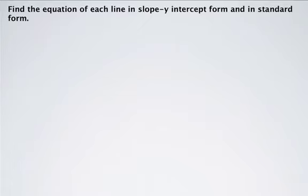Now first we're asked to find the equation of each line in slope-intercept form as well as in standard form. In the first example, we have to find the equation of the line with slope negative 5 passing through the point (2, -6).